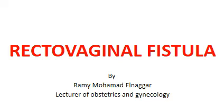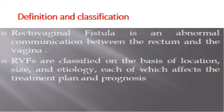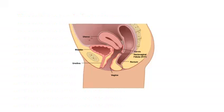Rectovaginal fistula, by Ram Mohamed Nagar. Today we will discuss rectovaginal fistula. A rectovaginal fistula is an abnormal communication between the rectum and the vagina. Rectovaginal fistulas are classified on the basis of location, size, and etiology, each of which affects the treatment plan and the prognosis. As you see in the diagram, this is the vagina, this is the rectum — here there is an abnormal canal connecting both, called a rectovaginal fistula.